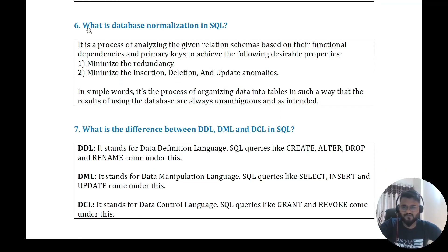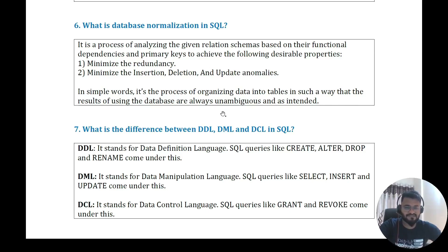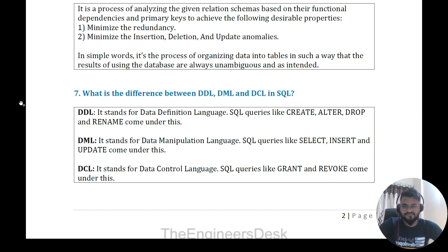Question six: what is database normalization in SQL? Database normalization is a process of analyzing a given relation schema based on functional dependencies and primary keys. When normalizing, we ensure every table is responsible for a different set of data, minimizing redundancy and minimizing insertion, deletion, and update anomalies. In simple words, it is the process of organizing data in tables so that results of using the database are always unambiguous.